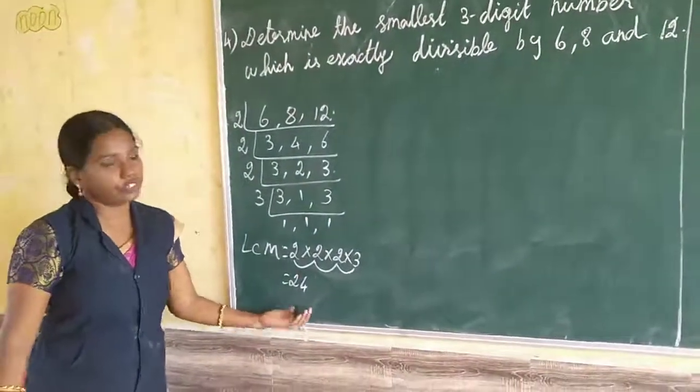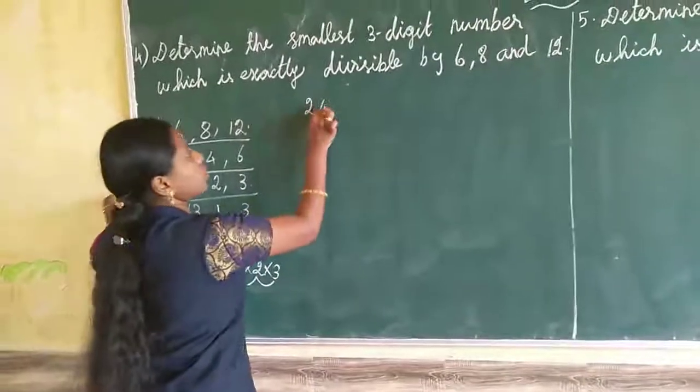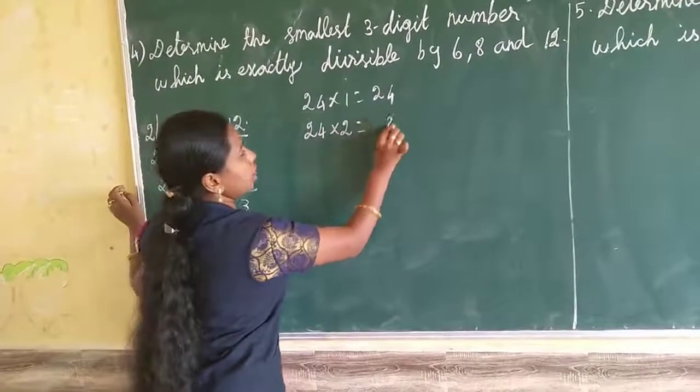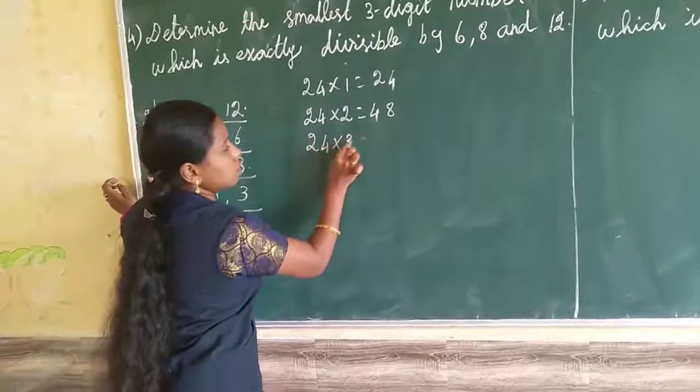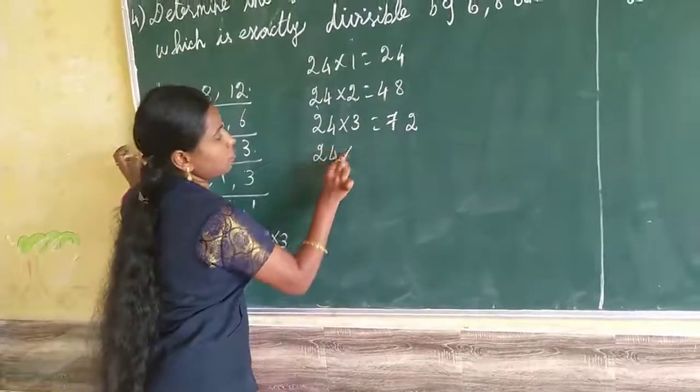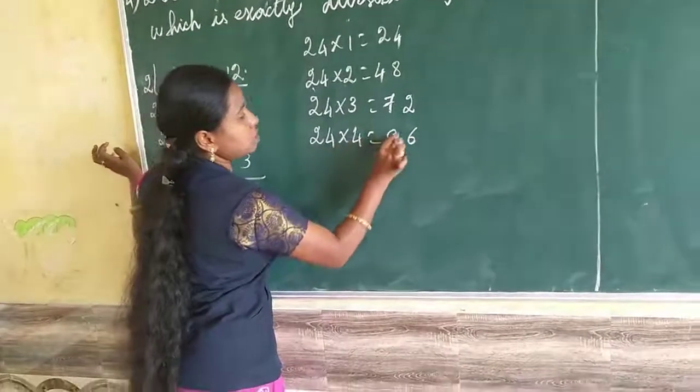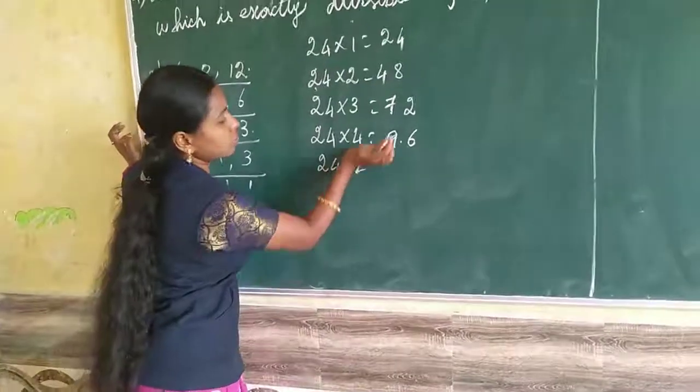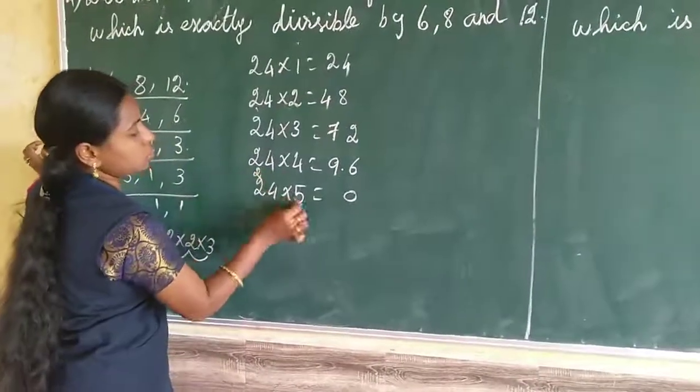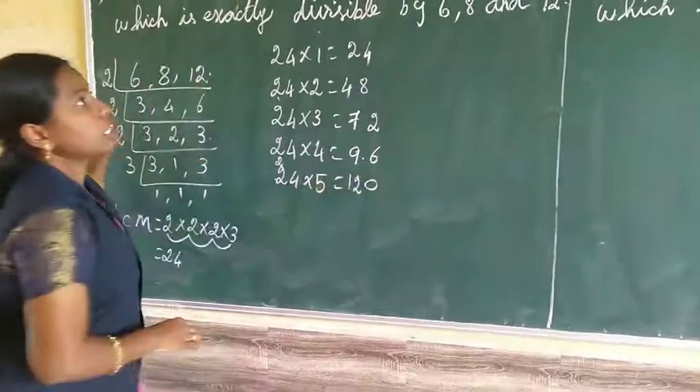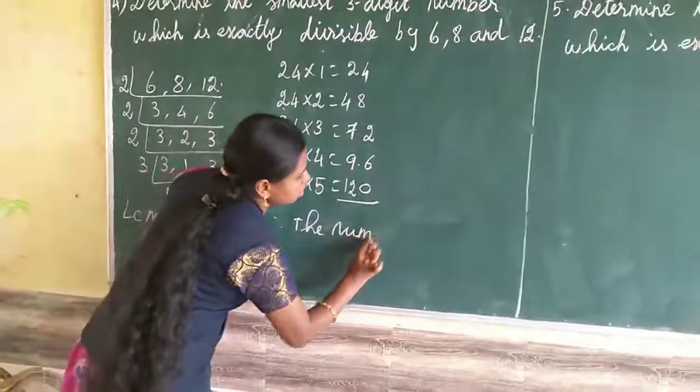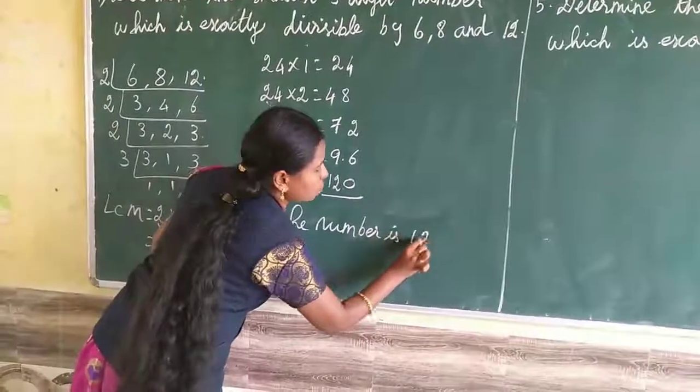You have to write the tables for 24. 24 the table, I am right. 24 into what? 24, next 24 into 2, 48, 24 into 3, 72, again 24 into 4, 96, 24 into 5, 120. They are asking the smallest 3-digit only, so the number is 120. Therefore, the number is 120. That's all.